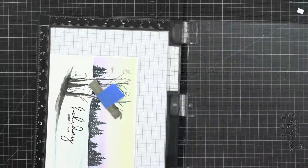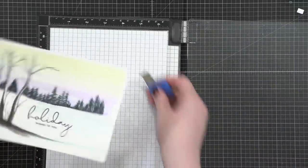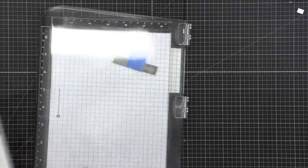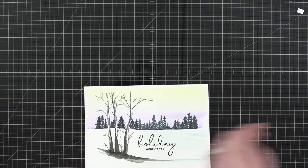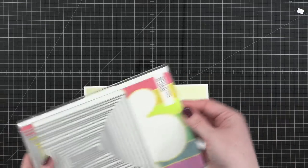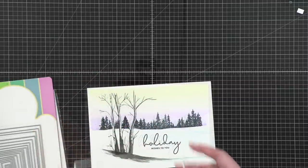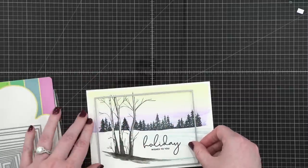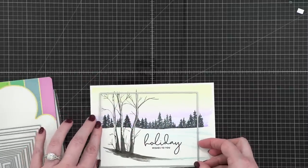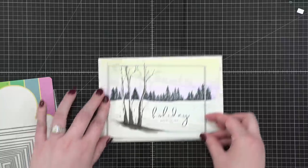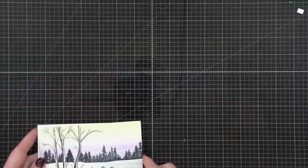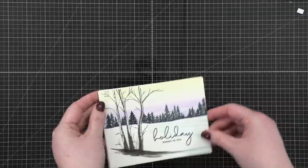All right, so I finished all of my stamping. I'm going to remove this from my Misti and I'm going to trim it down to an A2 card size. So I grabbed my A2 Layers dies from Waffle Flower and I just picked up the largest die and I positioned that over my painting and then ran that through my die cutting machine. I love using a die for that because then I can get it centered just the way I want it.